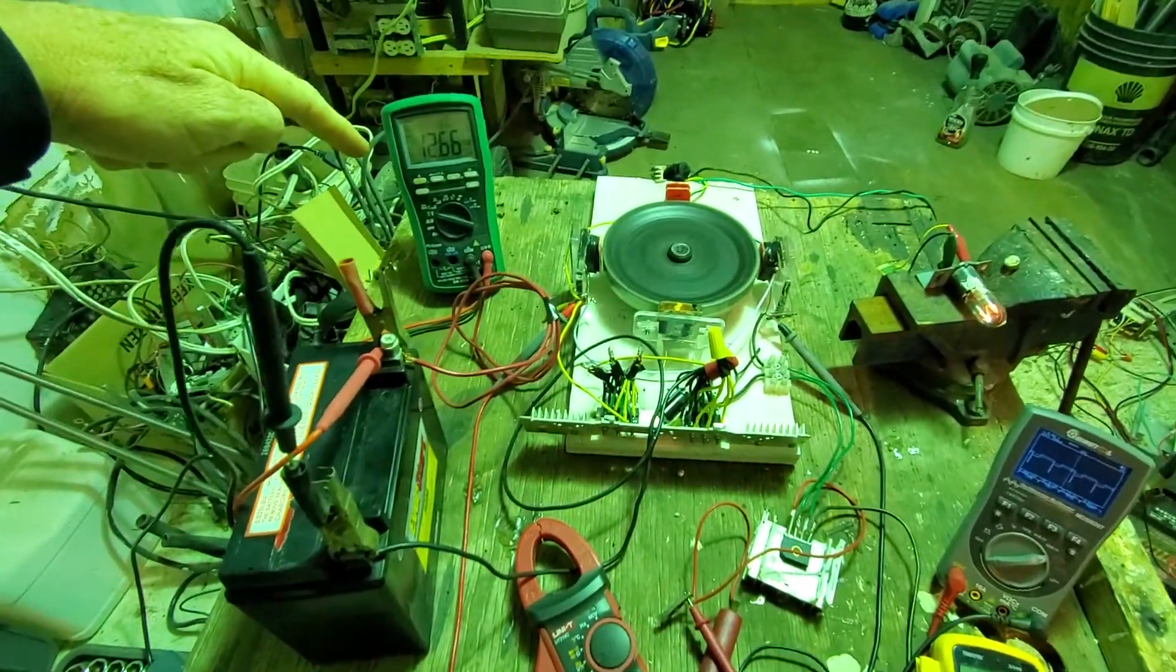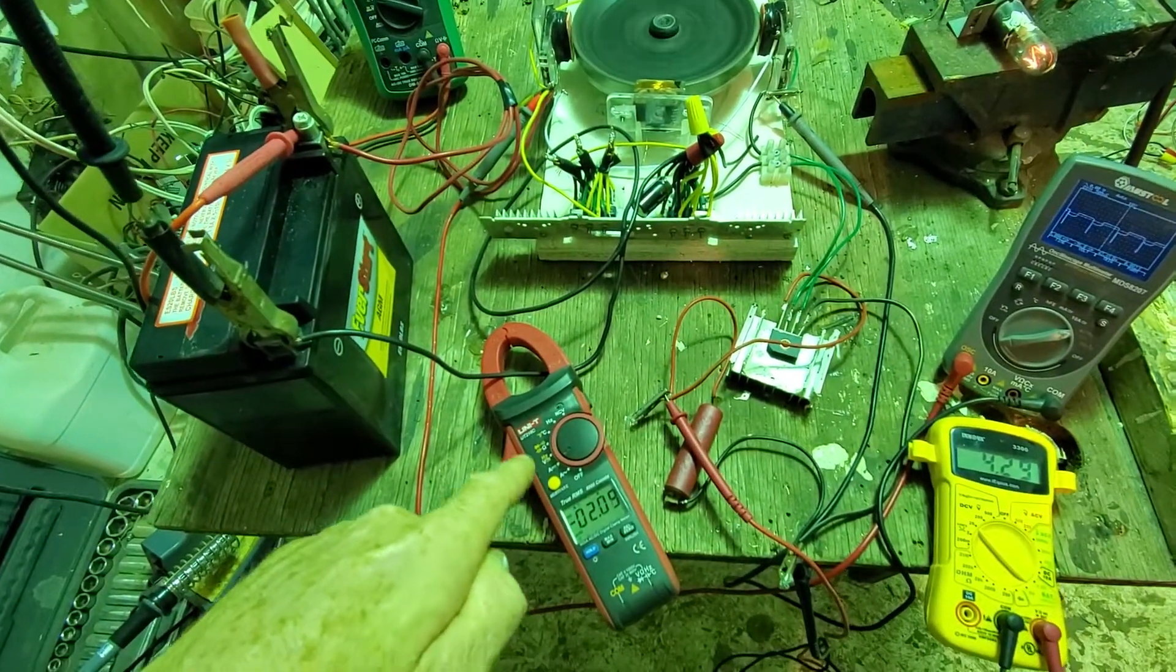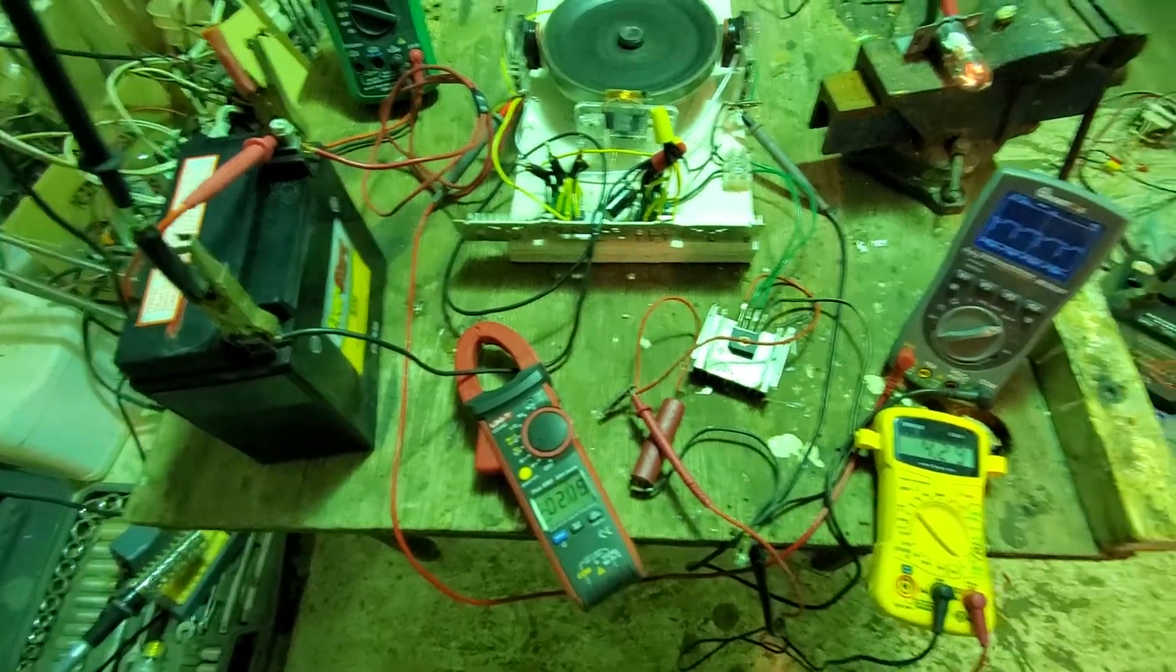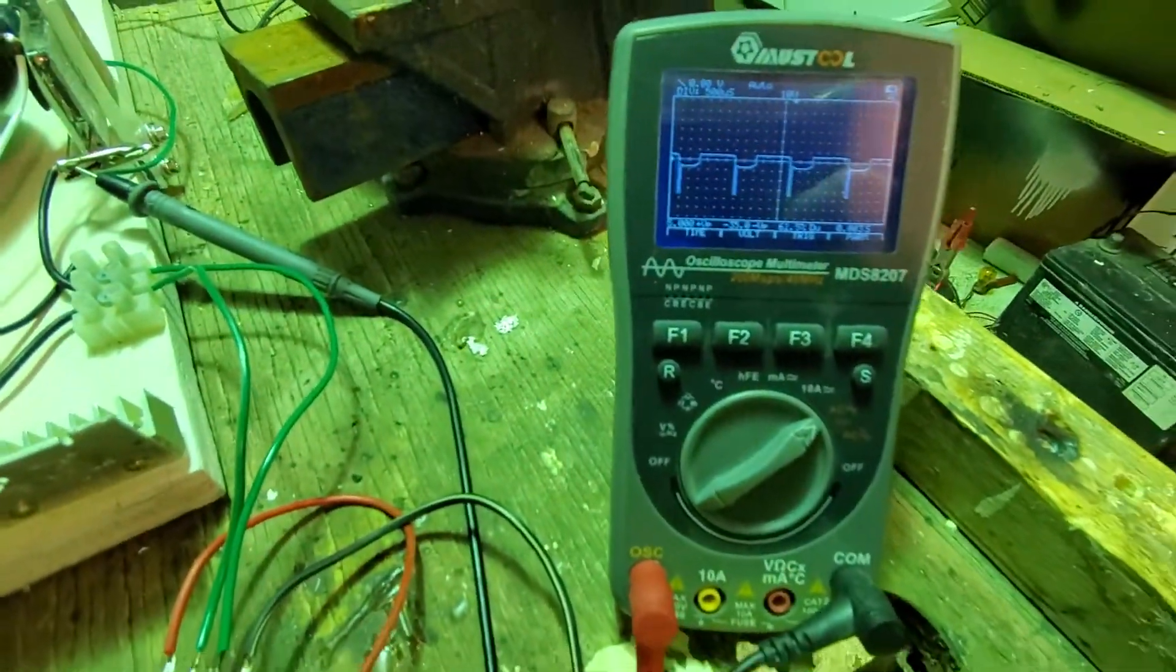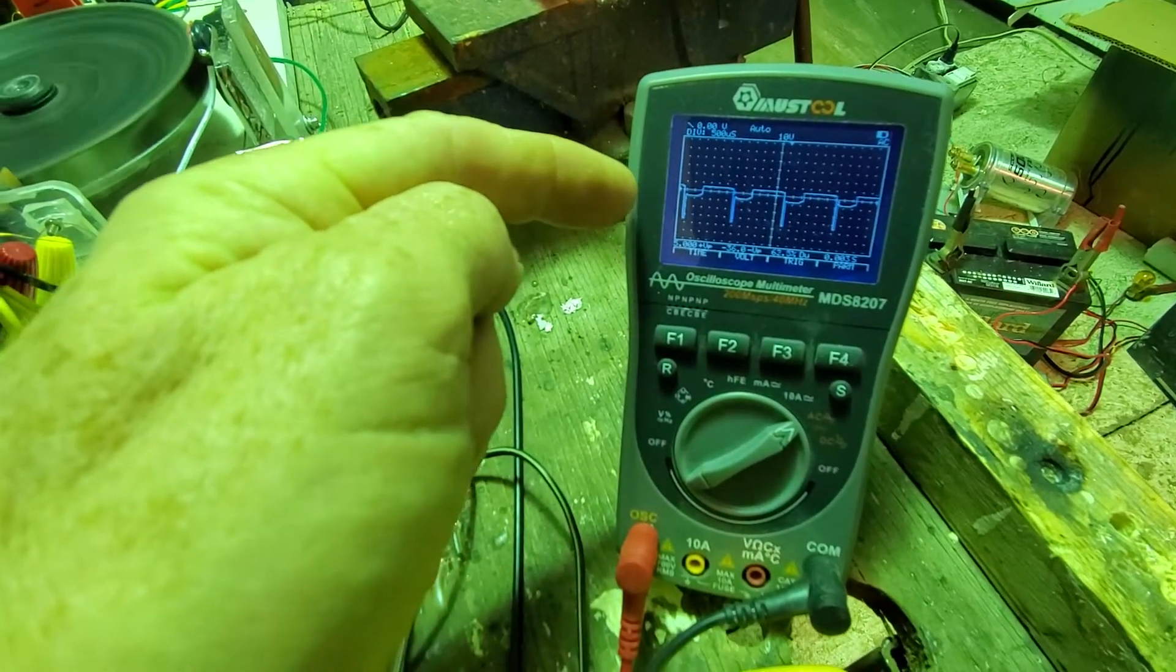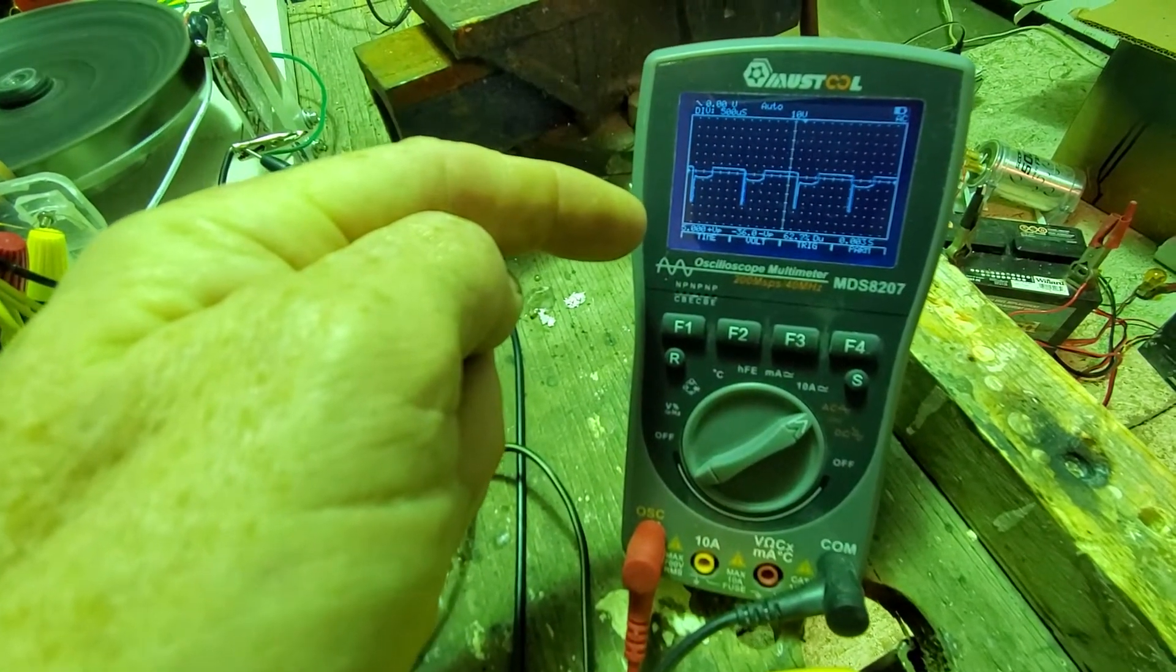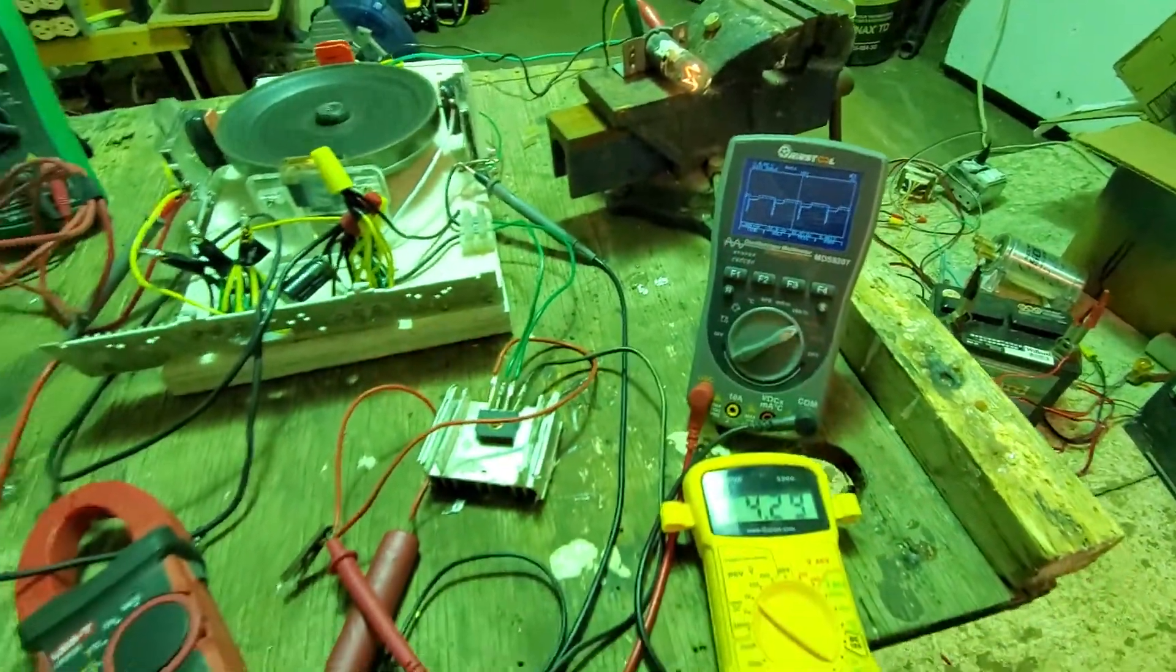This is the 12 volt battery that's running it. Here's the current going into the motor. That's the back EMF - it's hard to see on the screen, 36 volts back EMF.